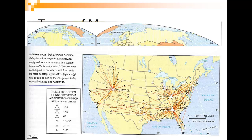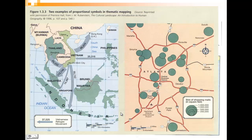Here's another one — a graduated symbol map of Delta Airlines hubs. The larger the triangle means the more number of cities connected by it. You can see Salt Lake City, Cincinnati, Atlanta, and Dallas are connected by the most, while these smaller subsidiary ones are connected by less.